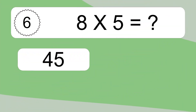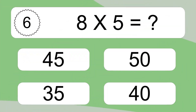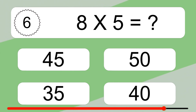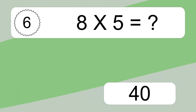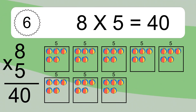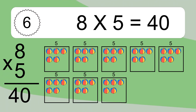8 times 5 equals what? 8 times 5 equals 40. We have 8 boxes, and each box has 5 colorful balls inside. If you count all the balls in all the boxes together, you will have 8 times 5 balls. This equals 40 balls.